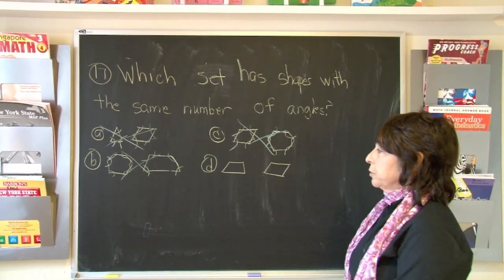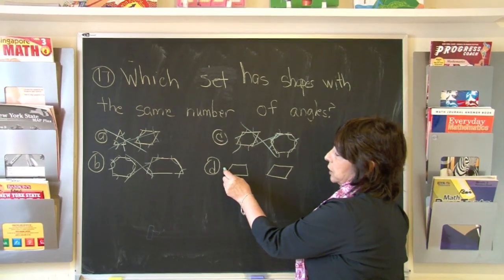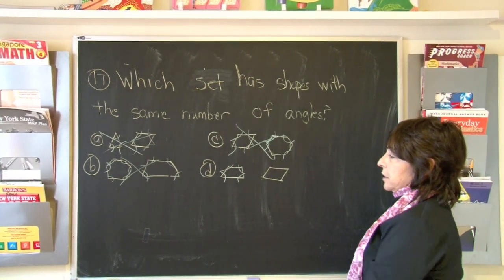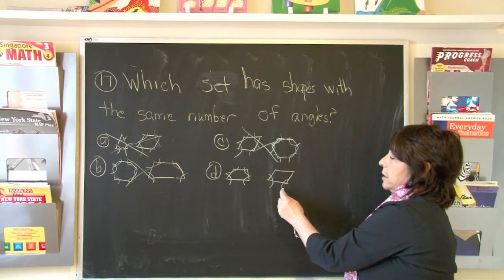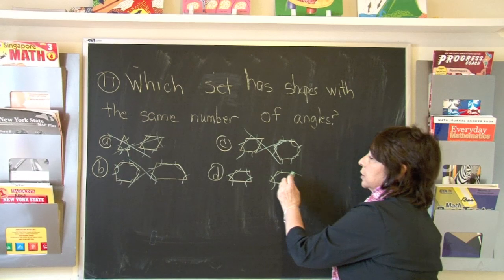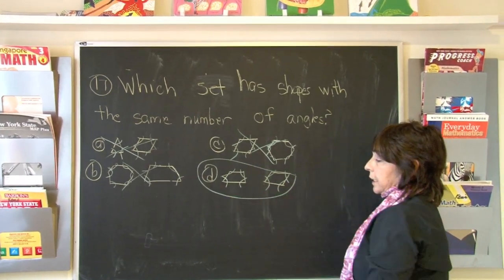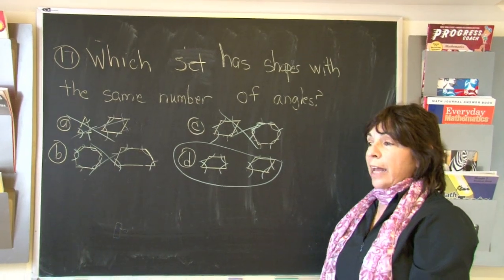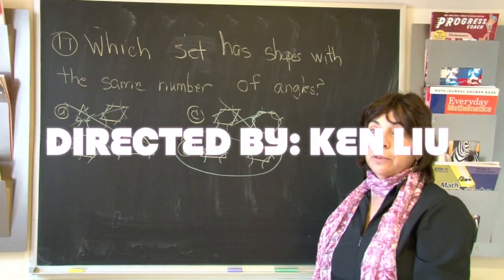But let's look. The trapezoid, because it has four sides, has four angles. And the parallelogram has four sides, so it has four angles. So the correct choice is D. And all you really need to know is that the number of sides is how many angles there will be.